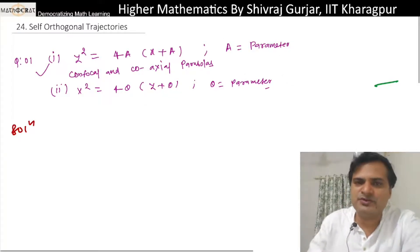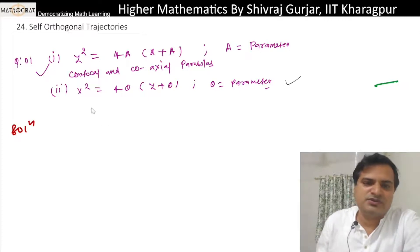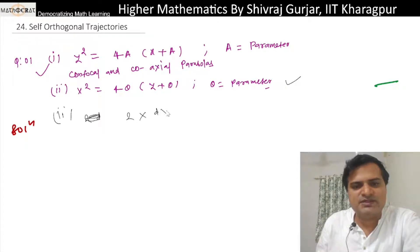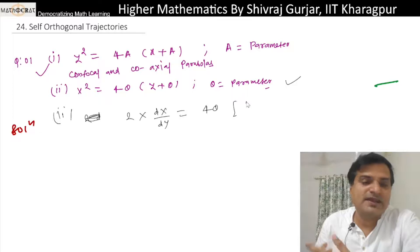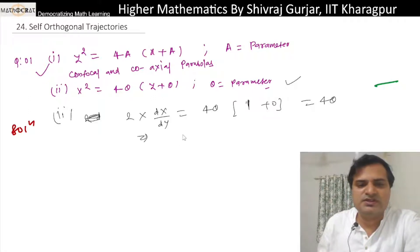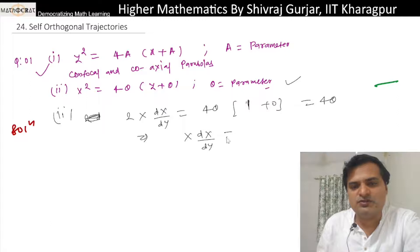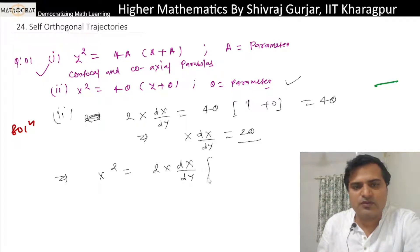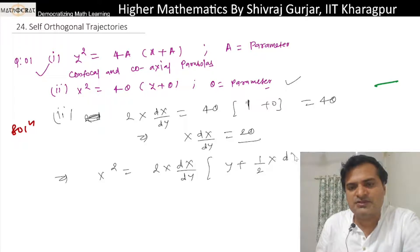Let's take this one. If I differentiate with respect to y, this will be: 2x dx/dy equals 4θ. With respect to y we get one plus zero equals 4θ, so x dx/dy equals 2θ. So y plus θ is (1/2) x dx/dy.